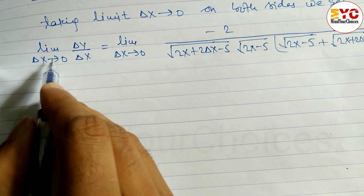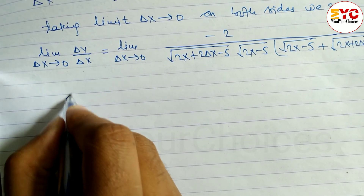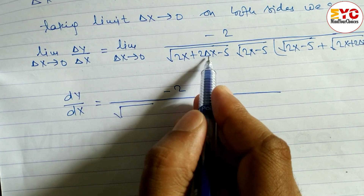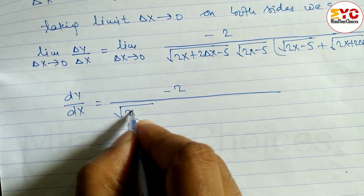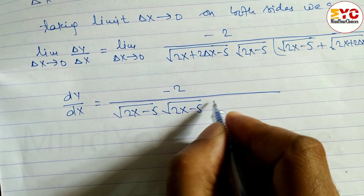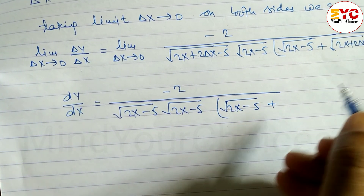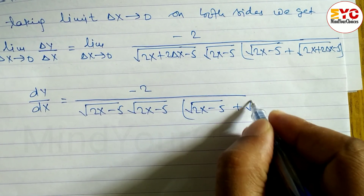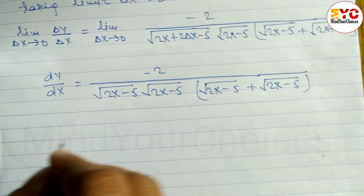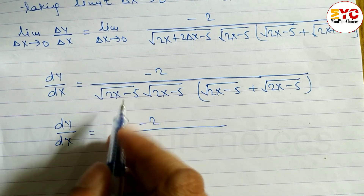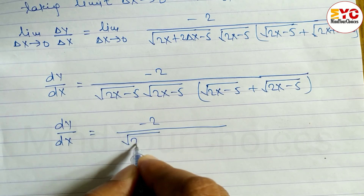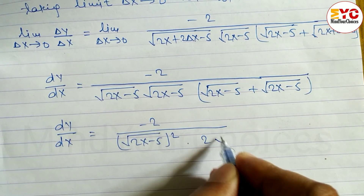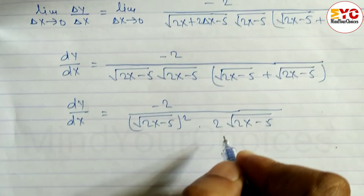The limit of del y/del x as del x tends to zero means dy/dx. We substitute del x = 0. So 2 times zero is zero, leaving root under (2x - 5) in those terms. So dy/dx equals minus 2 divided by root under (2x - 5) times root under (2x - 5) times (root under (2x - 5) plus root under (2x - 5)), which gives 2 root under (2x - 5).